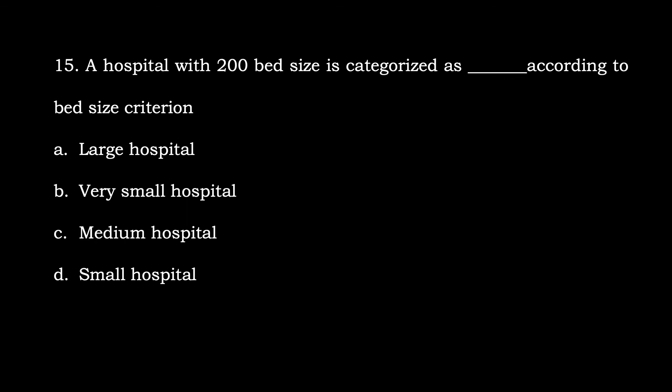Question number fifteen: A hospital with 200 bed size is categorized as what, according to bed size criteria? Options are: A) Large Hospital, B) Very Small Hospital, C) Medium Hospital, D) Small Hospital. The correct option is D, Small Hospital. A hospital with 200 beds is categorized as a Small Hospital according to bed size criteria.